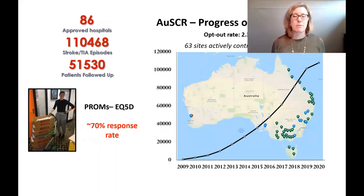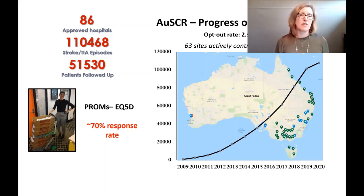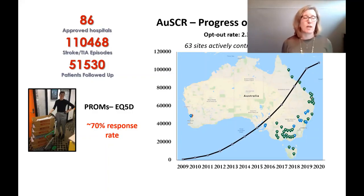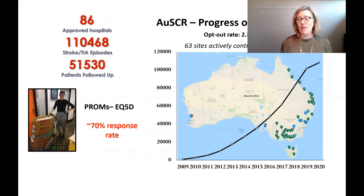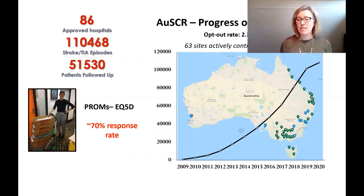We have nearly 100 hospitals participating in the registry and over 110,000 registrants, and around half of these registrants have completed the 90 to 180 day follow-up. Our response rate for the patient-reported outcomes is around 70 percent, so that is excellent. The registry has grown exponentially — we started in Victoria with 10 hospitals and it's grown to the majority of the eastern border of Australia, and now we've got every state participating in the registry except the Northern Territory. Our opt-out rate is quite low, it's around two percent.